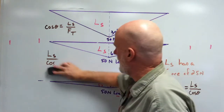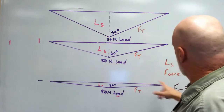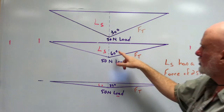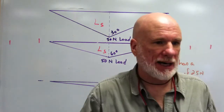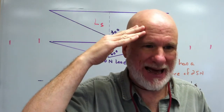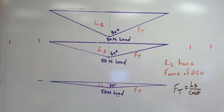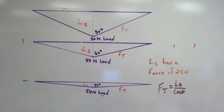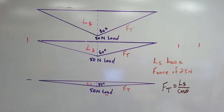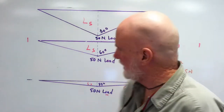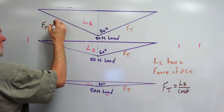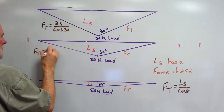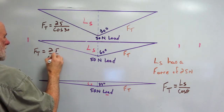What I want you to do is start setting up each equation. In other words, this is going to be 25 divided by cosine 30, then 25 divided by cosine 60, then 25 divided by cosine 89. See if a pattern is developing. So let's put it in: F T equals 25 over cosine 30; F T equals 25 over cosine 60.